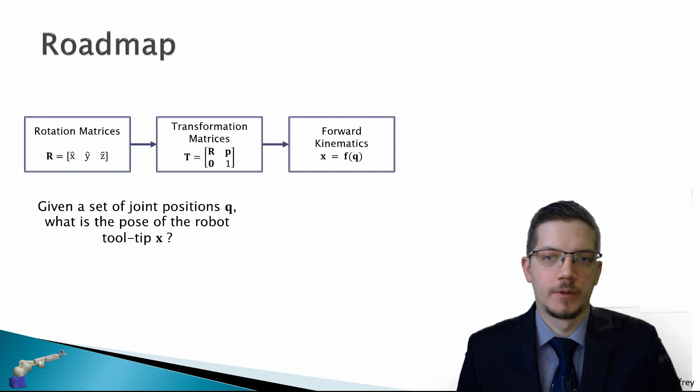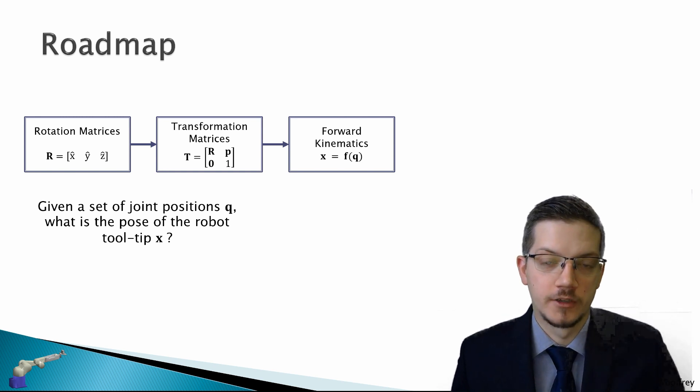So the question we want to answer is, given a set of joint positions Q, what is the pose of the robot tooltip X? So X will be a vector function of Q.